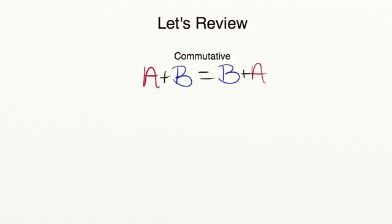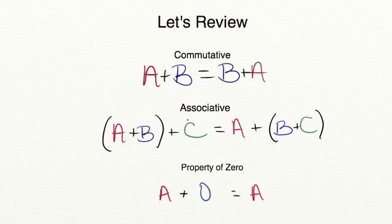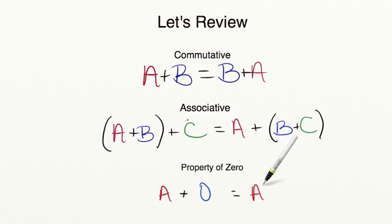Let's review what we've learned today. First, the commutative property: it doesn't matter the order of the numbers you're adding — they will still have the same sum. A plus B equals B plus A. Next, the associative property: you can put numbers into different groups and still get the same sum — (A plus B) plus C equals A plus (B plus C). Lastly, the property of zero states that when adding a number or set of numbers to zero, your sum will have the same value as the numbers you are adding.